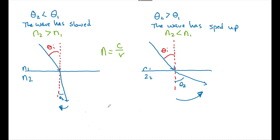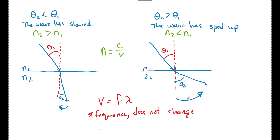We know that v equals frequency times wavelength. In refraction, frequency does not change — frequency tells us color. Imagine shining a blue light into a pool; your friend at the bottom sees a blue light, not a red one. So as v changes, frequency remains the same and wavelength changes. That's how v can change while frequency remains constant.